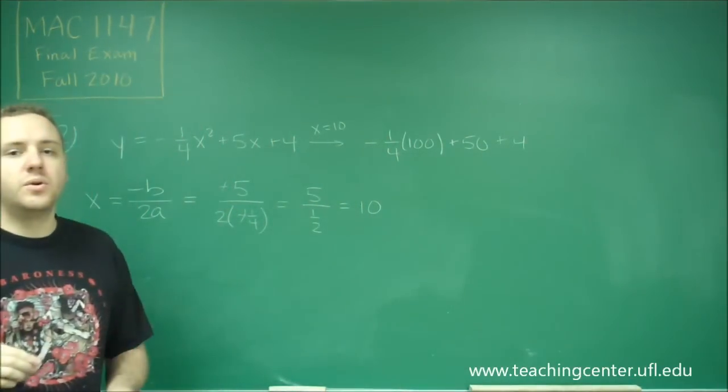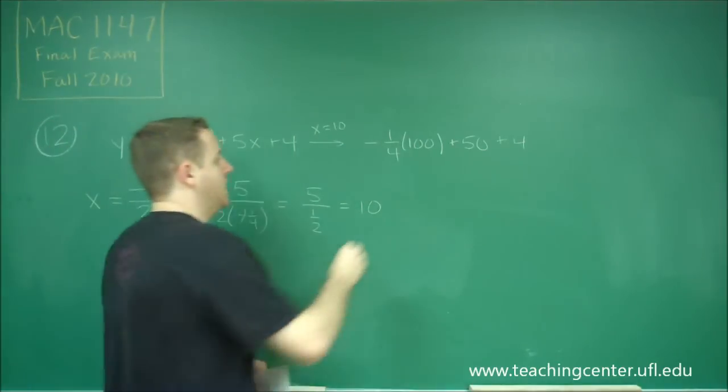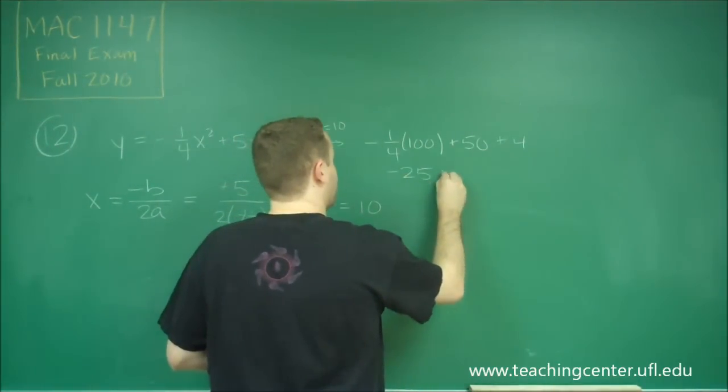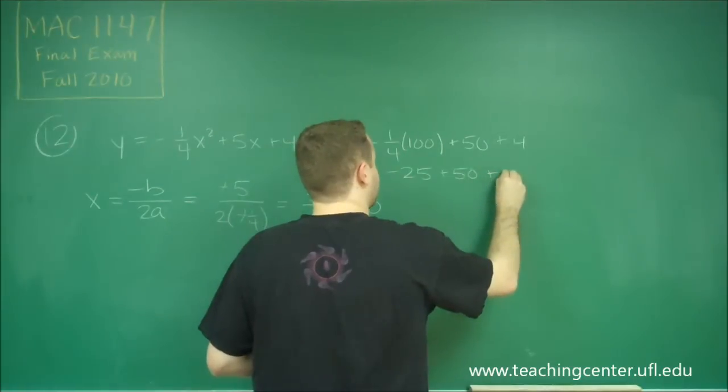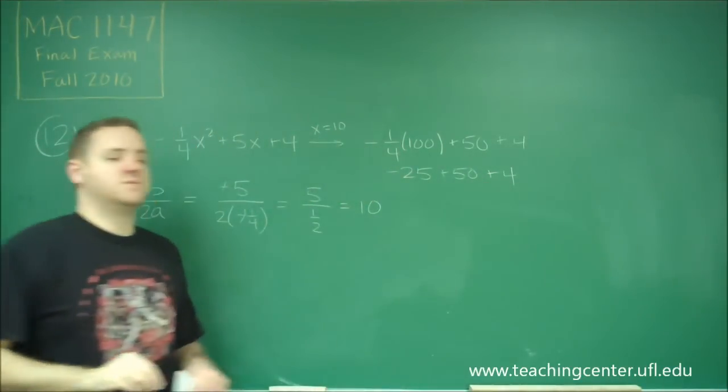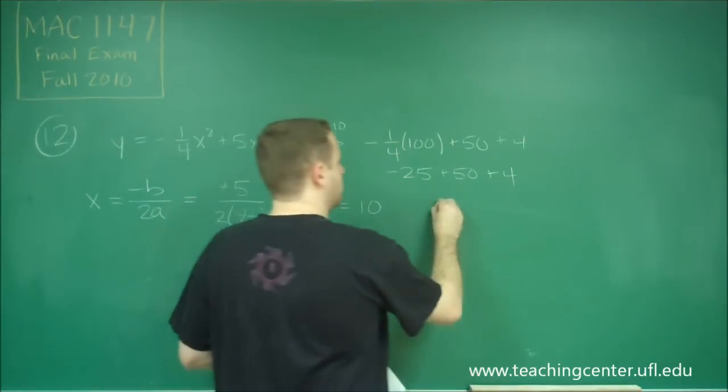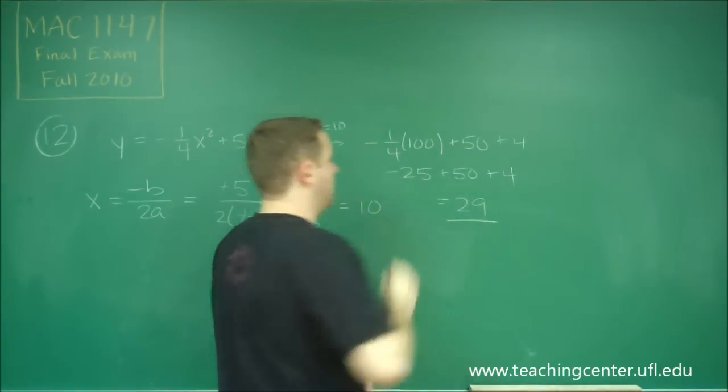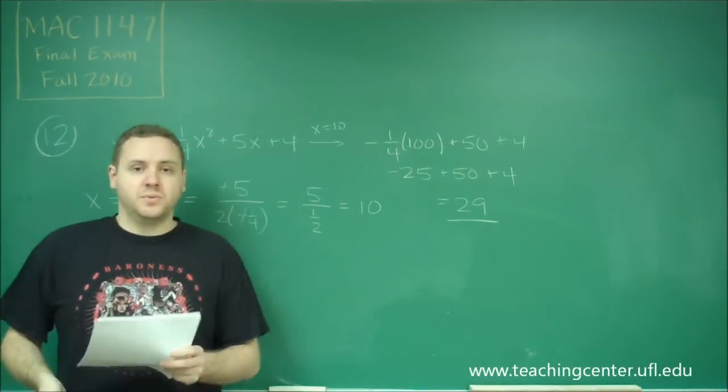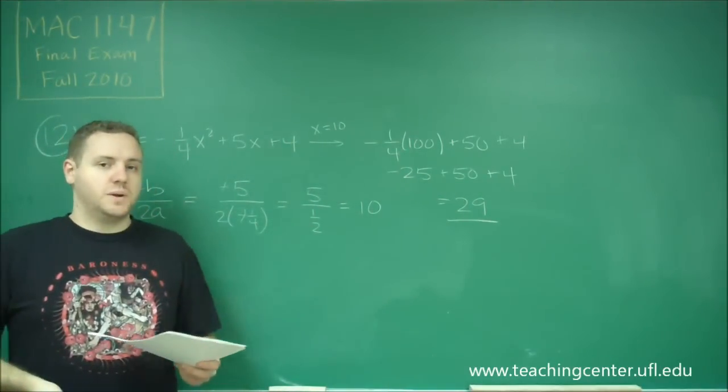Negative one-fourth times 100 would be negative 25, plus 50, plus 4. So, we get 25 plus 4 there, which is equal to 29. That is the maximum value of our quadratic function, 29.